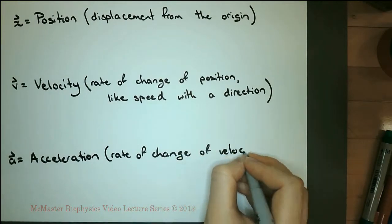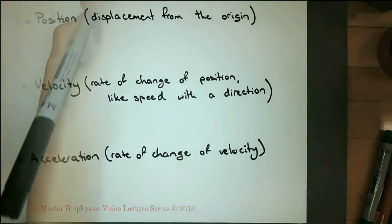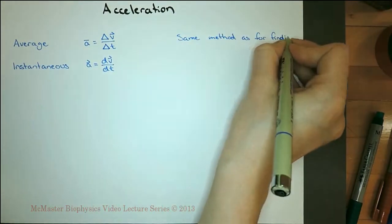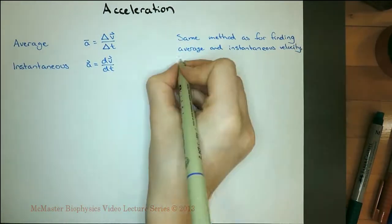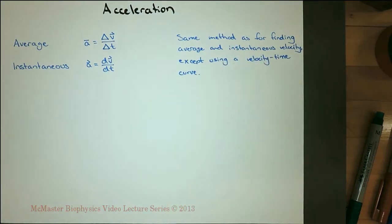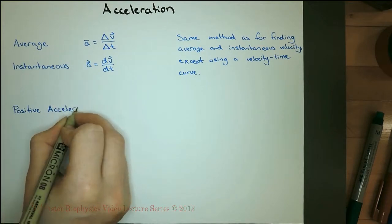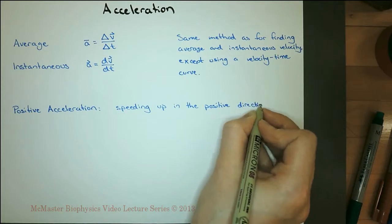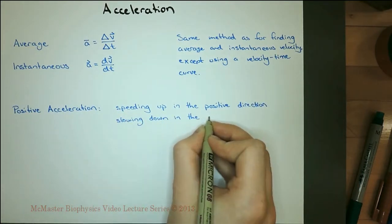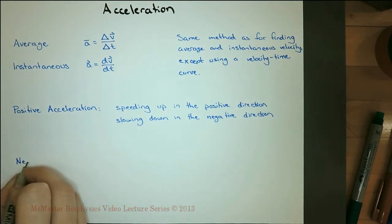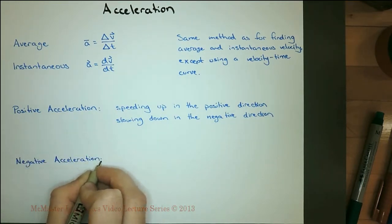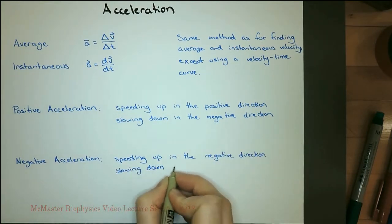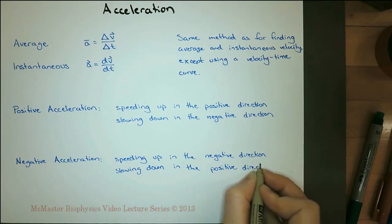Acceleration is the rate of change of velocity. Average and instantaneous acceleration are calculated using the same method as for velocity, except using a velocity-time curve instead of a position-time curve. Positive acceleration can occur in two instances: when speeding up while heading in the positive direction, or while slowing down while heading in the negative direction. Negative acceleration can occur in two instances: when speeding up while moving in the negative direction, or when slowing down while moving in the positive direction.